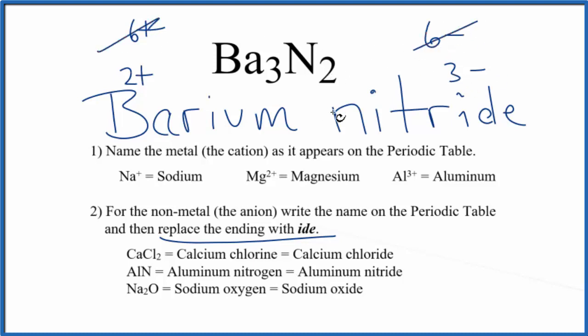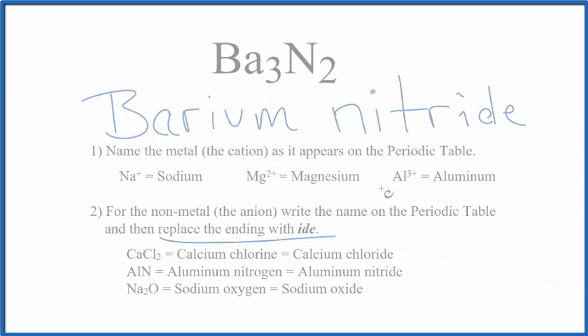These add up to zero, giving us a net charge of zero. So the formula for barium nitride is Ba3N2. This is Dr. B with the name and formula for Ba3N2. Thanks for watching.